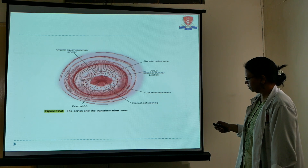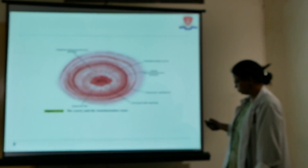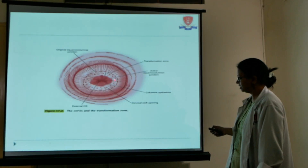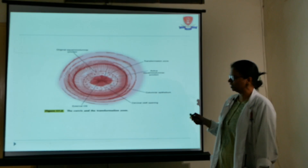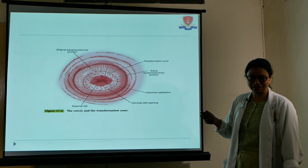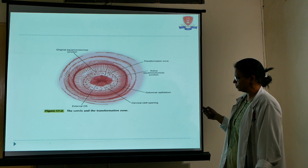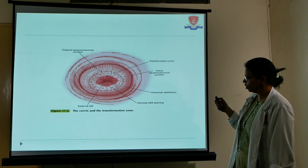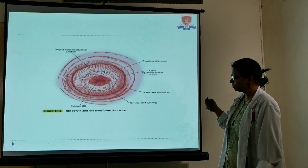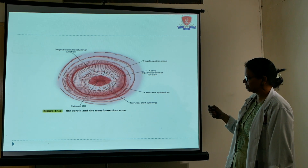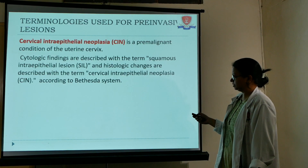We can identify the old squamous columnar junction through the colposcope and through Nabothian cysts. Nabothian cysts are gland secretions that become encased when the new squamous epithelium blocks them. The columnar epithelium present at the baseline has its secretions blocked, forming Nabothian follicles.